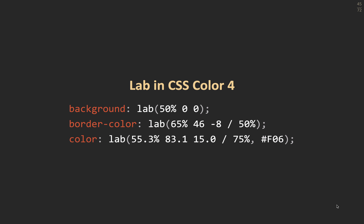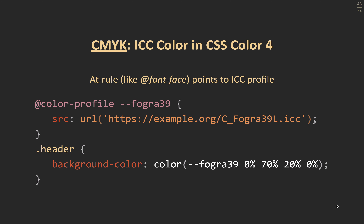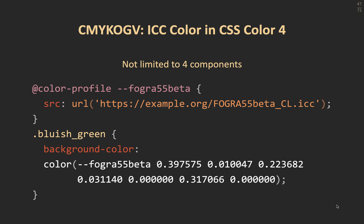LAB and LCH in Color 4 are adapted to a D50 white point, partly for ICC compatibility and partly for compatibility with most measuring instruments. But that's not all — we can also use ICC color profiles. You point to them like a web font with an @color-profile declaration, give it a name, and then use it with as many parameters as needed. For CMYK we need 4 parameters — here's a Fogra 39 example. We're also not restricted to 4 parameters, as shown with a CMYK-plus orange, green, and violet example using Fogra 55.